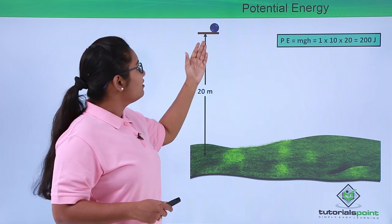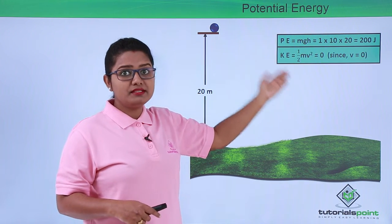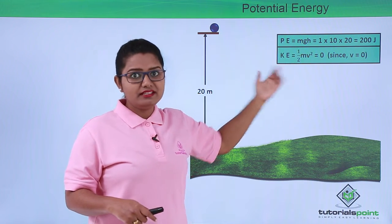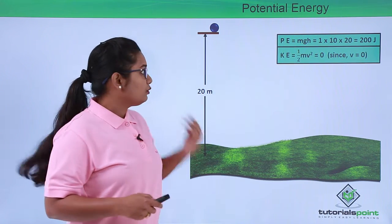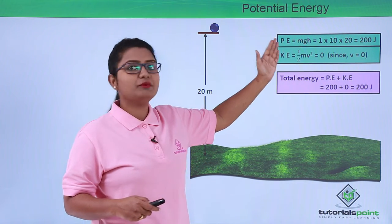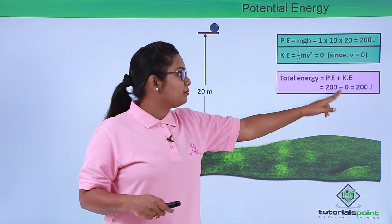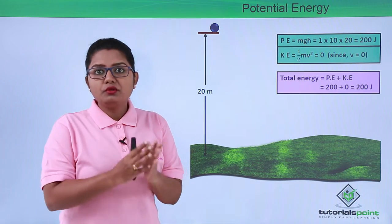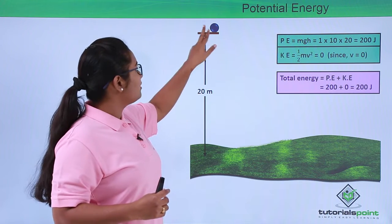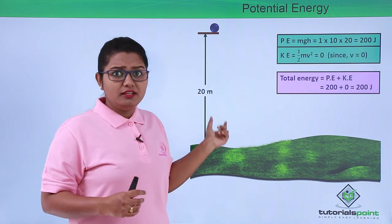Now when we look for kinetic energy, the velocity of the body is zero since it is at rest, so the kinetic energy of the body is zero. The total energy will be the sum of the potential energy and kinetic energy, which gives us 200 plus 0, which is 200 joules. So the total energy this body has is 200 joules when it is above the ground at a height of 20 meters.